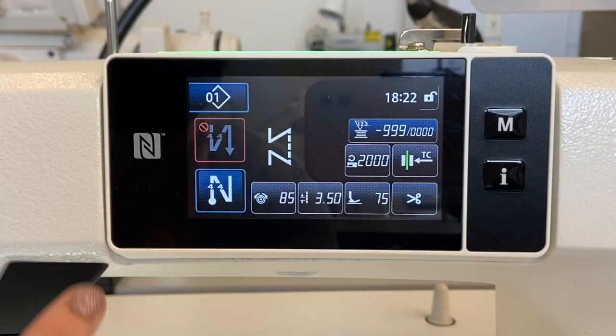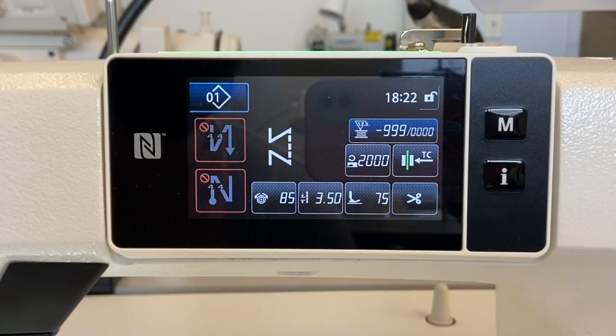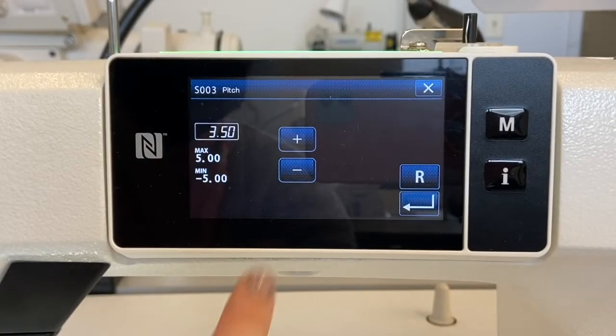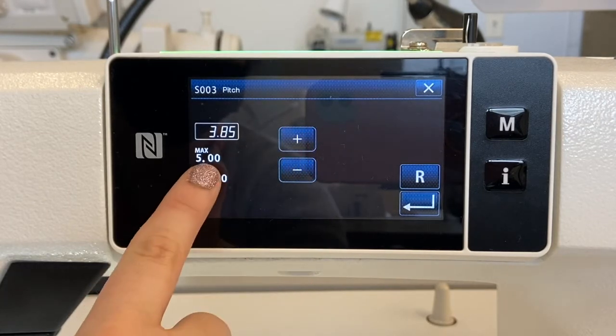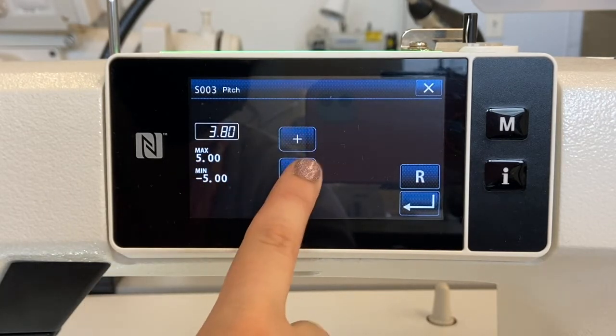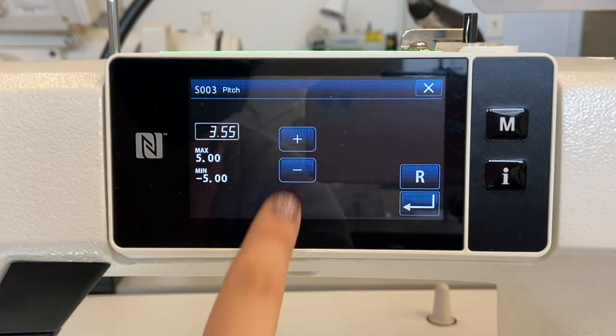On the left side of the screen, you can opt to turn on or off the automatic back stitch at the beginning and end of a seam. The stitch length adjustments can be increased or decreased using the touch screen. Hit the enter button on the lower right-hand corner to save your changes.